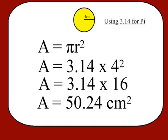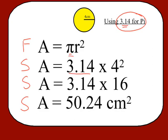So if we look at the formula, we're going to substitute 3.14 for pi. We start with the formula, we substitute in, we solve, and then we'll have our solution. So our formula is pi r squared. We're going to substitute 3.14 in for pi. The radius of the circle is 4 centimeters, so we'll substitute that in.